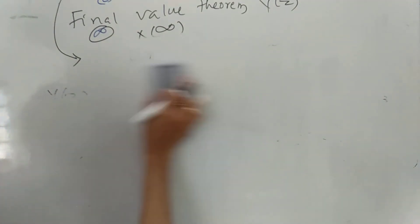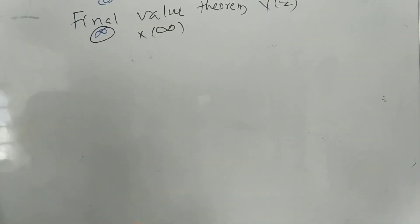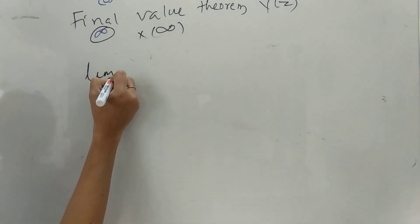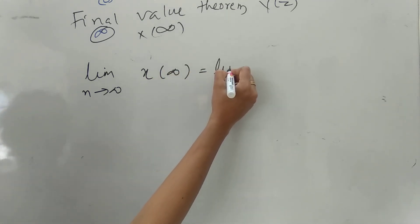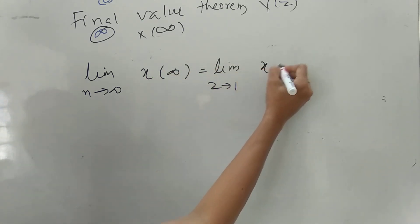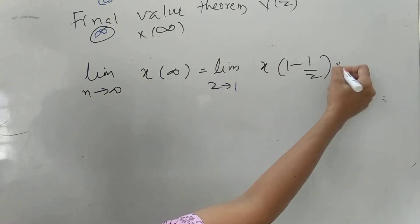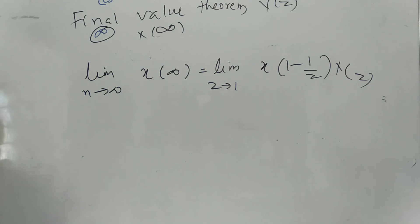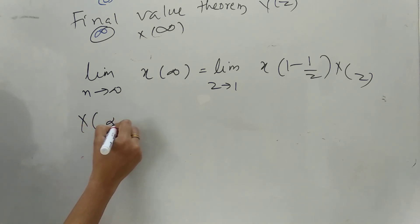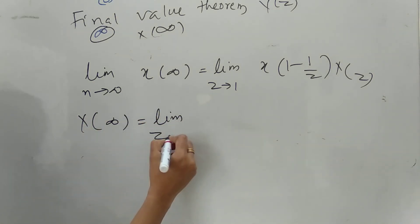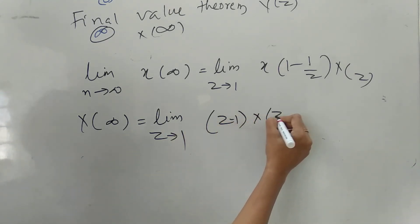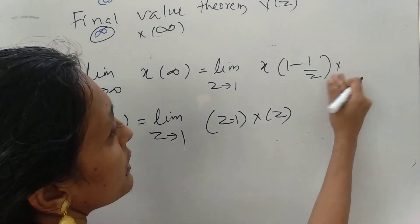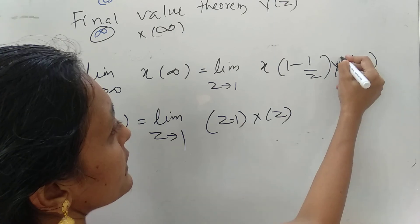For the Initial Value Theorem, at the start of the function we assume the value to be zero. For the Final Value Theorem, we take the limit as N tends to infinity: X of infinity equals limit as Z tends to 1 of (1 minus Z) times X of Z, if X of infinity exists. Considering the previous example, X of infinity equals limit as Z tends to 1 of (Z minus 1) times X of Z.